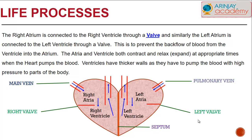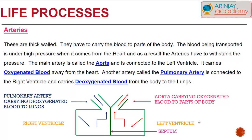The arteries are thick-walled because they carry blood to different parts of the body under high pressure from the heart. The main artery, called the aorta, is connected to the left ventricle and carries oxygenated blood away from the heart. Another artery, the pulmonary artery, is connected to the right ventricle and carries deoxygenated blood from the body to the lungs.